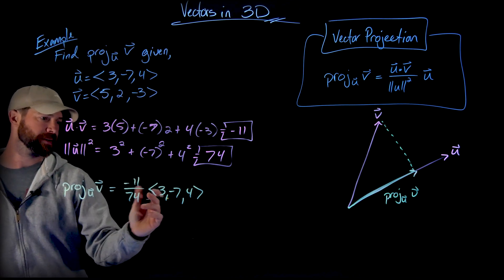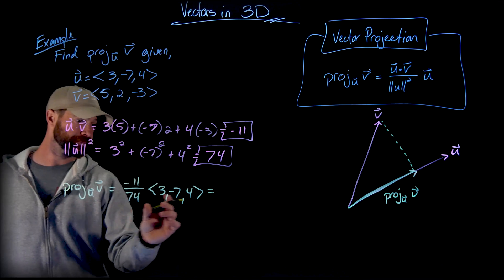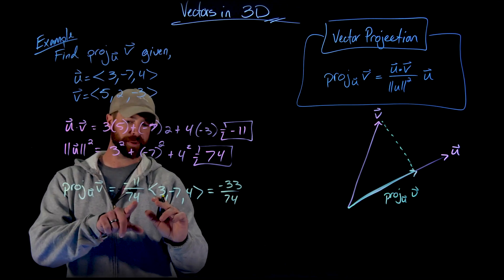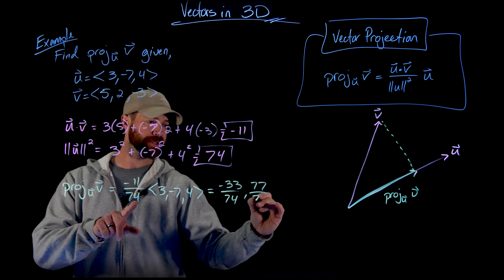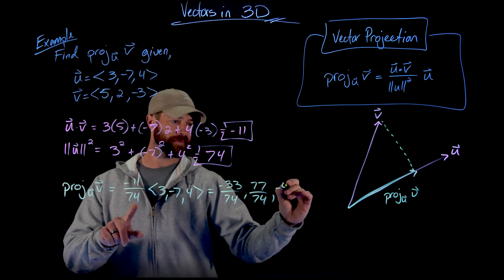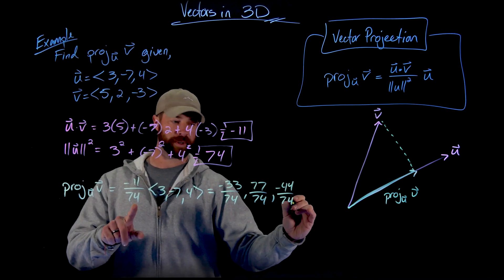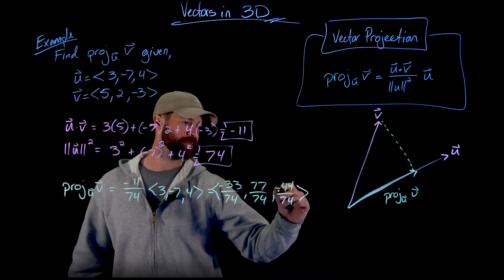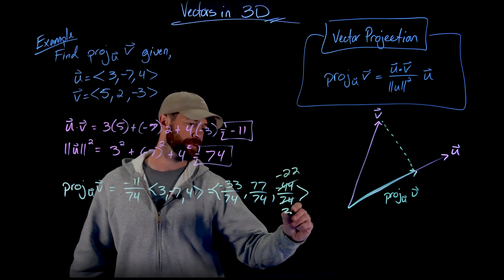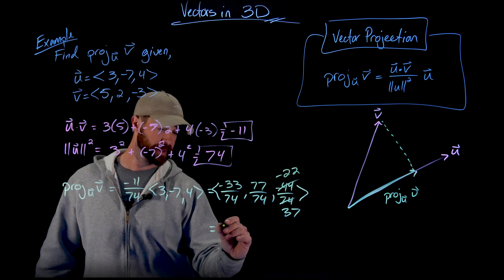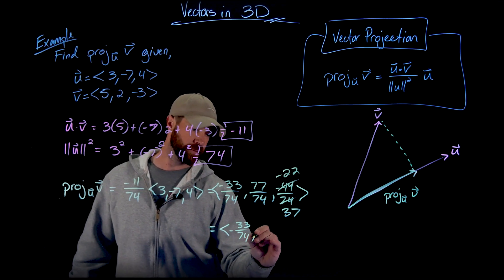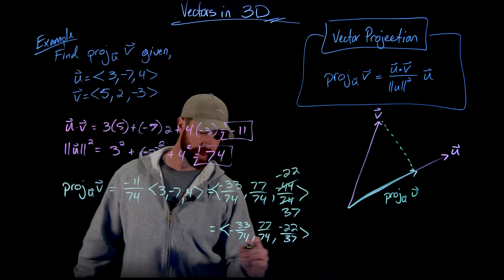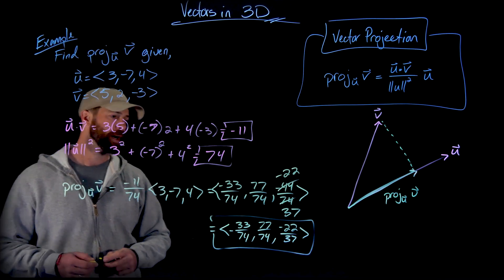But I digress. Let's just multiply this out. So when I multiply this scalar by this vector, I'm going to get negative 33 over 74 for the first component. Then I get 77 over 74 for the second component. And then finally, negative 44 over 74 for the third component. And that's really the work, but I can do a little reducing here. I'll take out a factor of 2 to get negative 22 over 37. So just to make it nice and clean, we got negative 33 over 74, and then 77 over 74, and negative 22 over 37, which represents the projection onto vector U of vector V.